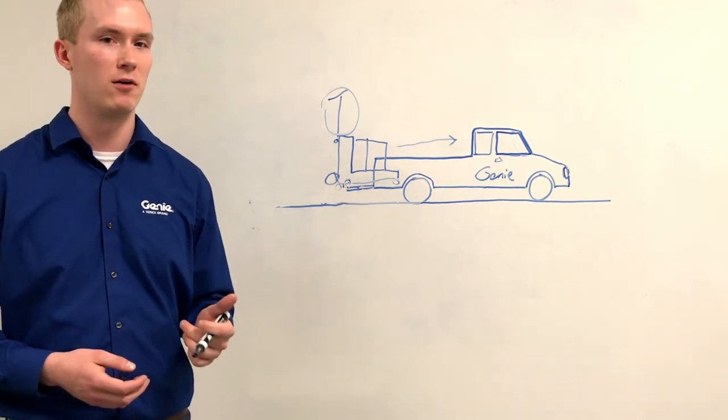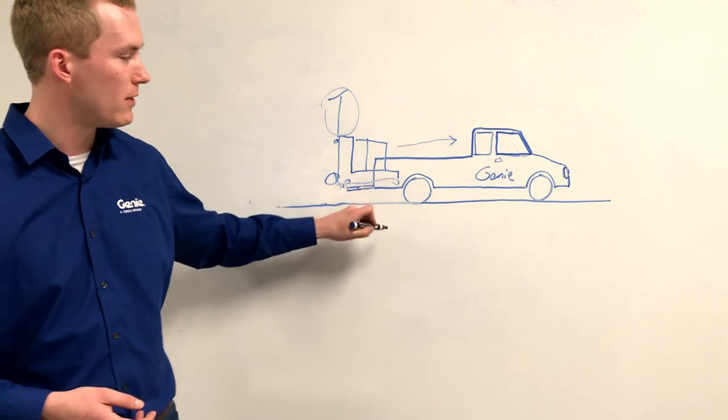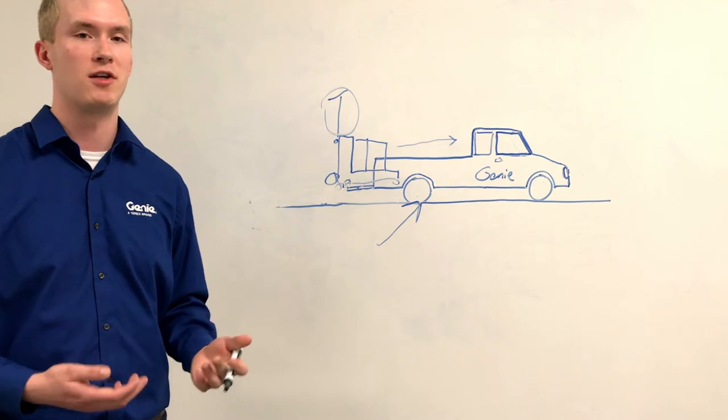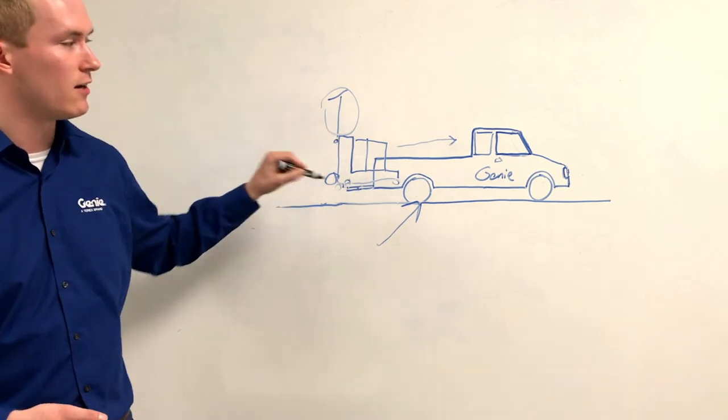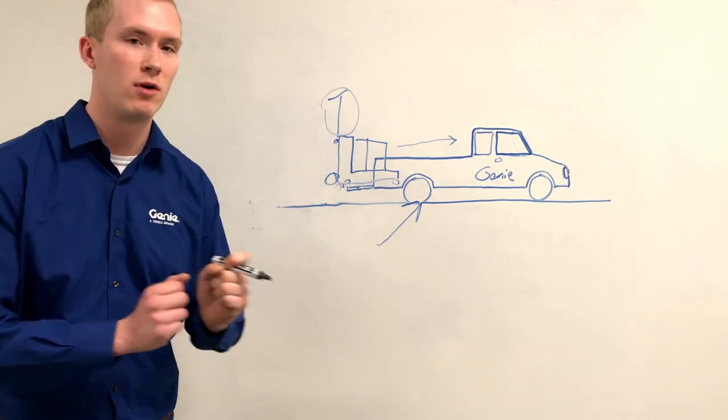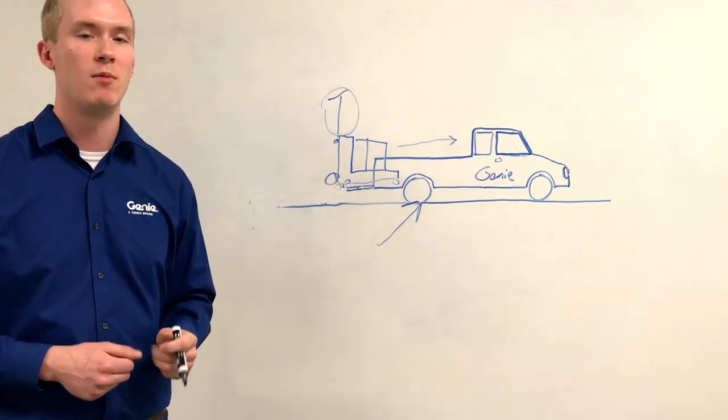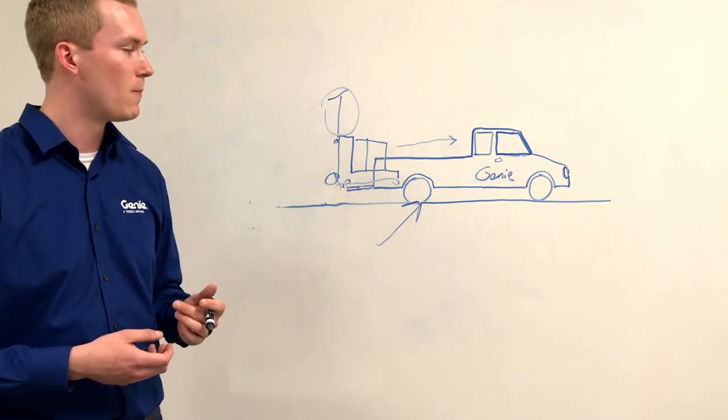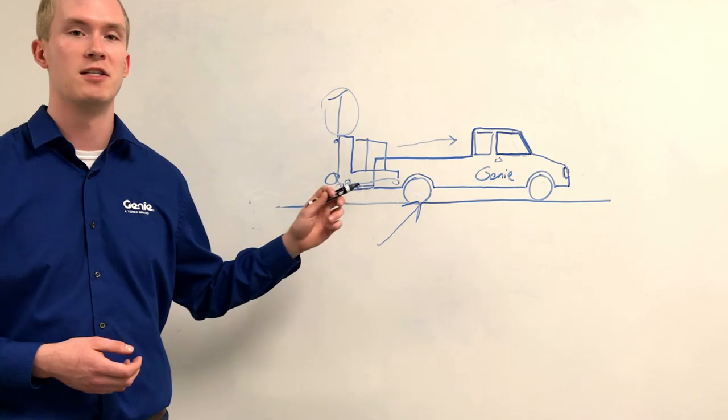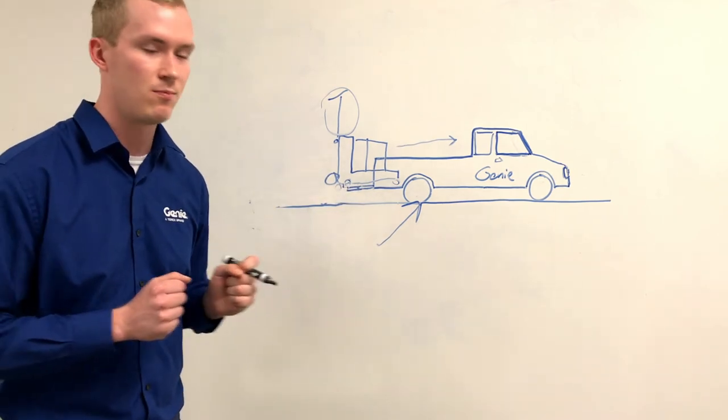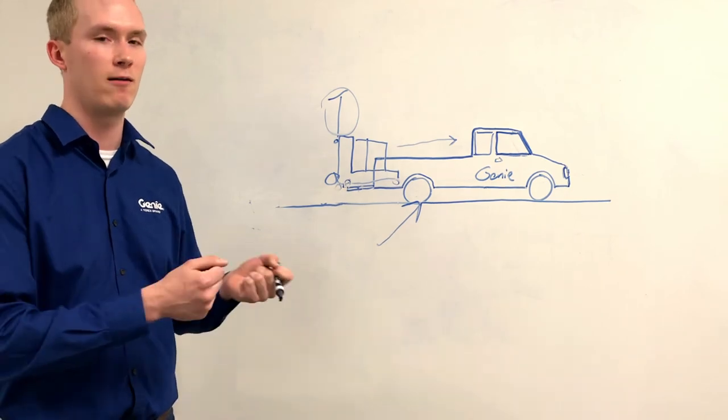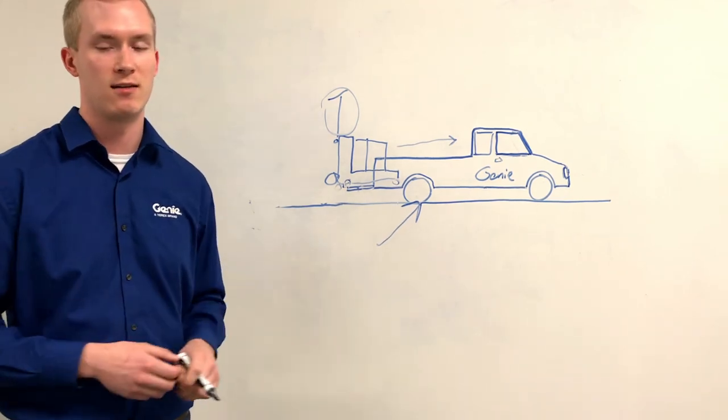A couple tips for loading and unloading. We want to make sure that our vehicle, our pickup truck, is on a firm level surface. Any type of incline or decline is going to make the loading or unloading not only challenging as we might have to push up slope, but also dangerous for when we're unloading. We also want to make sure that the park and brake of the vehicle is on to avoid any movement as we're rotating the aerial work platform up into the truck bed and as we're pushing it into the bed.